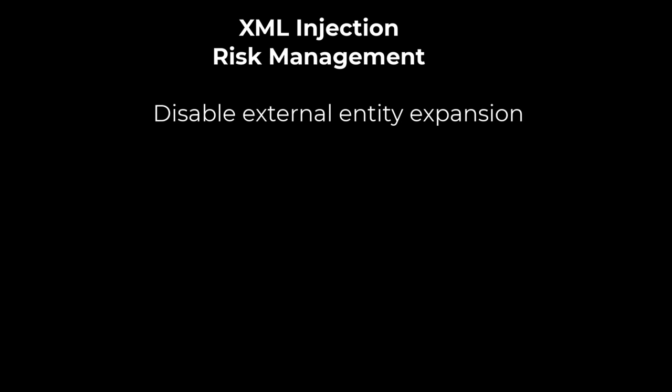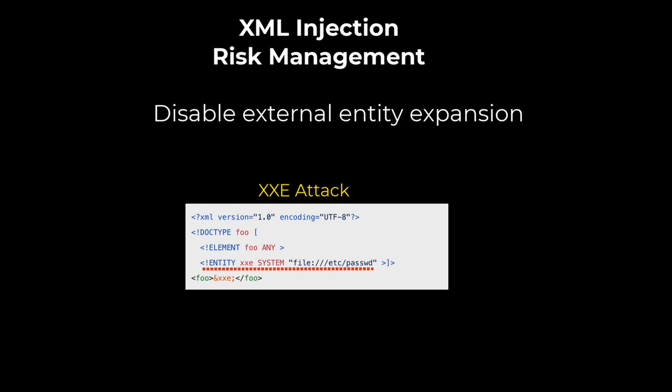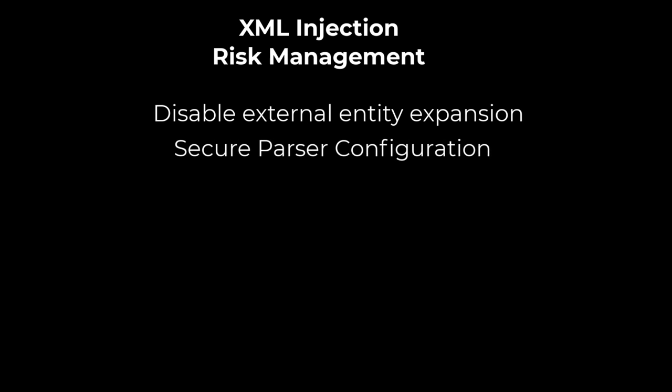Disabling external entity expansion prevents XML external entity (XXE) attacks, which exploit the ability of XML parsers to include external entities, leading to data exfiltration or denial of service. Developers can mitigate this risk by configuring XML parsers to disable external entity processing. Proper configuration of XML parsers is essential, including setting secure defaults and ensuring the parser does not process potentially dangerous constructs. For example, disabling DTDs (document type definitions) and external entities can prevent many types of XML injection attacks.